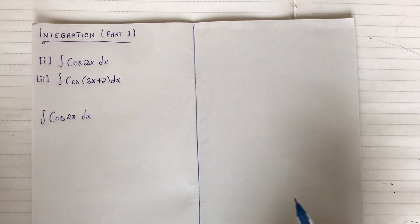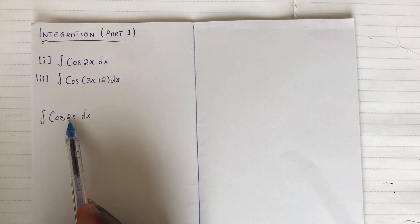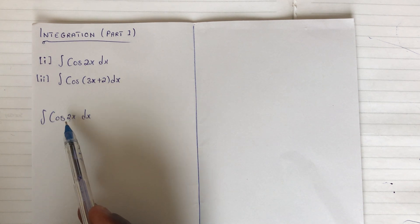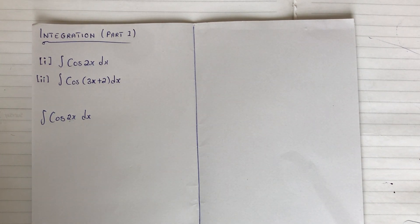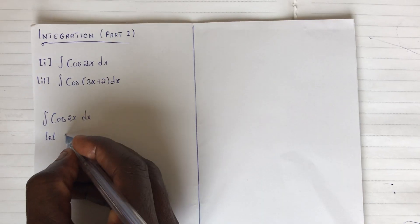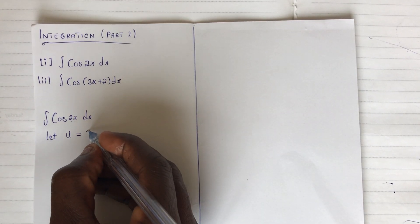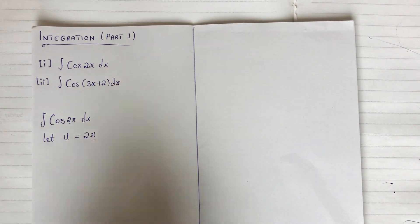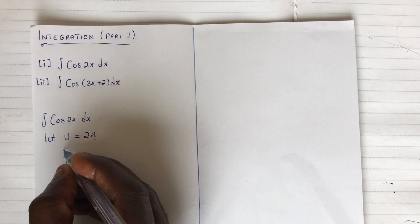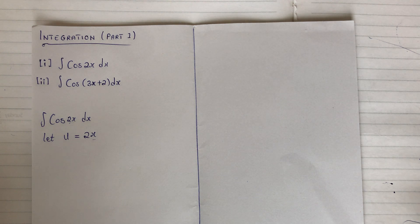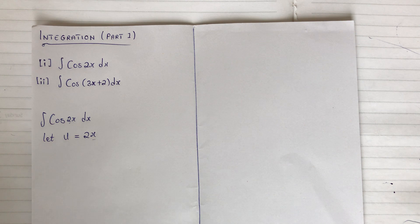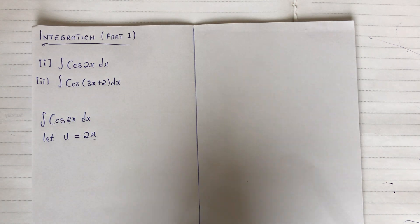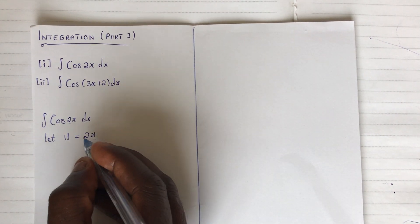The first thing you do when you have a function of this form is to consider whatever you have here — 2x — and represent it with a variable. So let's use the variable u. So you say that let u be equal to 2x, only the 2x, and then you differentiate 2x. Remember we are doing integration, but we are applying differentiation at the same time. If you don't know differentiation, go to my channel and search for introduction to differentiation.